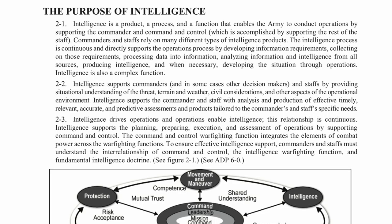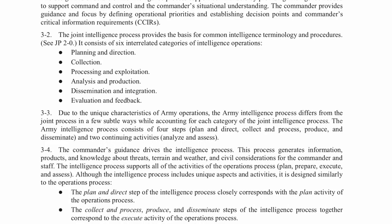The purpose of intelligence: intelligence is a product, a process, and a function that enables the Army to conduct operations by supporting the commander and command and control. It's a warfighting function that directly impacts the operations process — plan, prepare, execute, and assess. The intel process provides the basis for common intelligence terminology and procedures. It consists of six interrelated categories: planning and direction, collection, processing and exploitation, analysis and production, dissemination and integration, and evaluation and feedback — constantly happening in a loop.